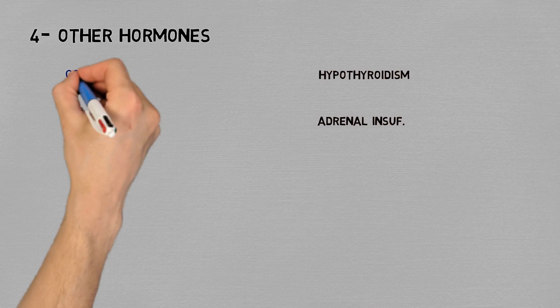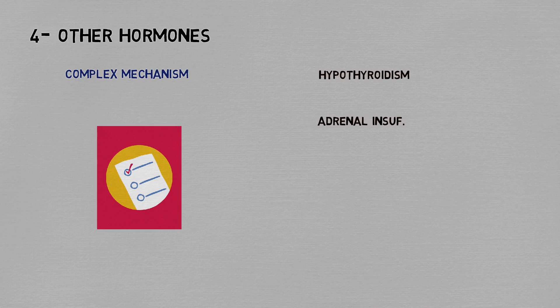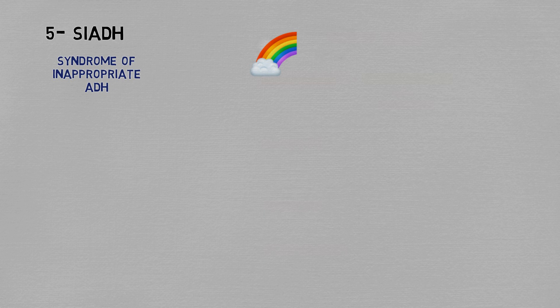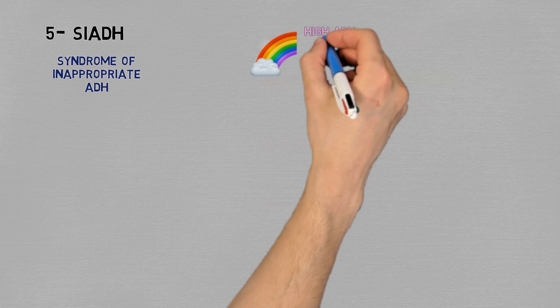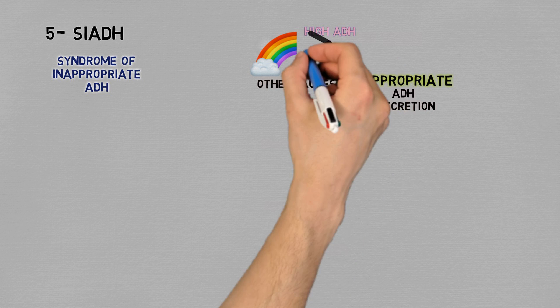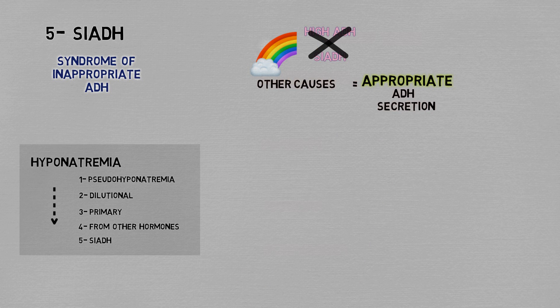The fourth category is other hormones — meaning hypothyroidism and hypocortisolism. The way they cause hyponatremia is a bit complex, but what you need to remember is that if you're at the point of considering SIADH, order the tests for these conditions because you have to rule them out first. In a perfect world you'd diagnose SIADH by measuring ADH and seeing if it's high, but the problem is that in many of the situations mentioned before, ADH will be high because it's part of the compensatory mechanism — so you could never call it an inappropriate secretion. The lab value itself doesn't really help you make the diagnosis; you really have to run the list and exclude everything else.